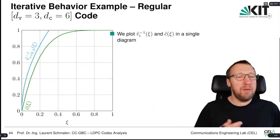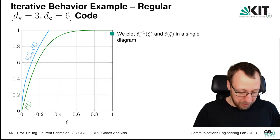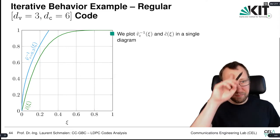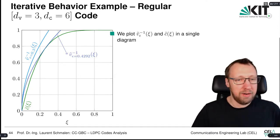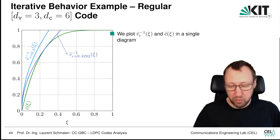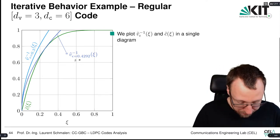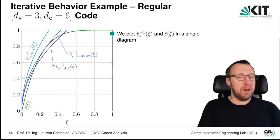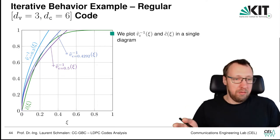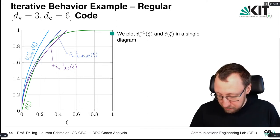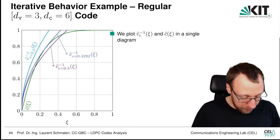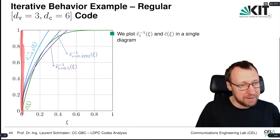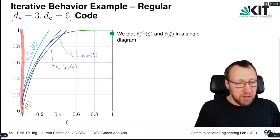We plot C̃ and then plot Ṽ^(−1) for several values of ε: ε = 0.3, ε = 0.4292 (which is ε*, the threshold), and ε = 0.5. Recall that plotting Ṽ^(−1) means plotting with flipped axes — we use the y-axis as the equivalent x-axis.